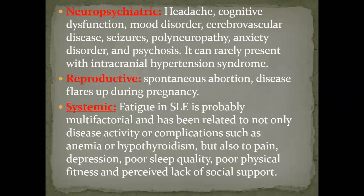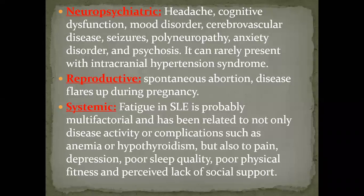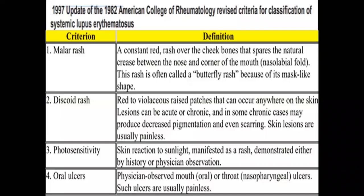Neuropsychiatric manifestations can include headache, cognitive dysfunction, mood disorders, cerebrovascular disease such as stroke, seizures, polyneuropathy, and intracranial hypertension syndrome. Reproductive system: spontaneous abortions can occur, and disease tends to flare during pregnancies due to hormonal impact. Lupus can also affect the thyroid and other organs through the autoimmune reaction.